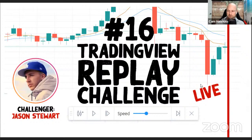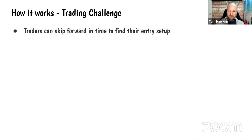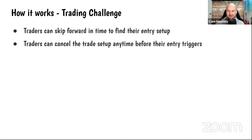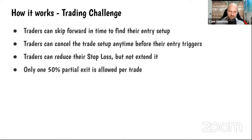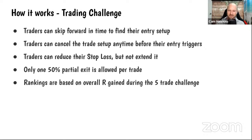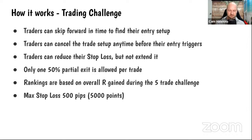So the trading challenge works like this: we put you at a point in the past on the 30-minute chart. The trader can skip forward in time to find their entry setup, can cancel any trade before entry triggers, can reduce their stop loss but not extend it. Only one partial 50% exit is allowed per trade, and rankings are based on overall R gained during the five-trade challenge. R equals your stop loss; anything beyond that is a multiple of your stop loss.